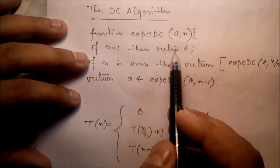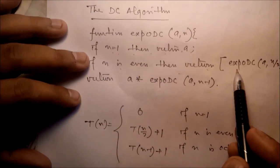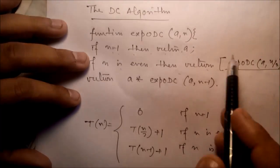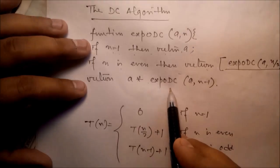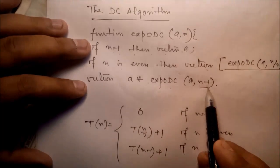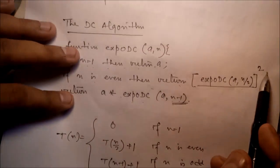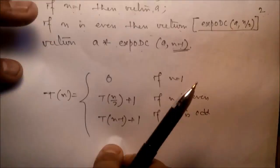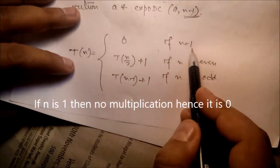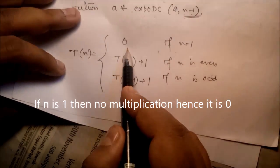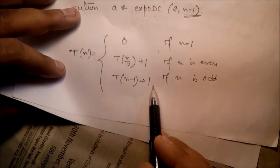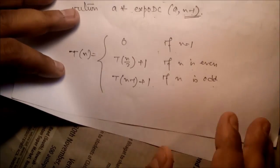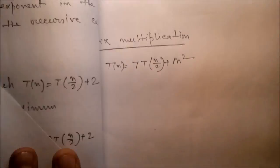The algorithm: function Exponential — if n equals 1, return a. If n is even, return Expo(a, n/2) squared. If n is odd, return a times Expo(a, n-1). For complexity: T(1) = 0, T(n) = T(n/2) + 1 if even, or T(n-1) + 1 if odd.